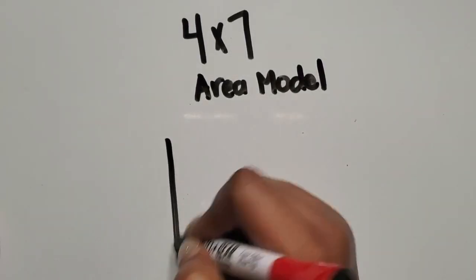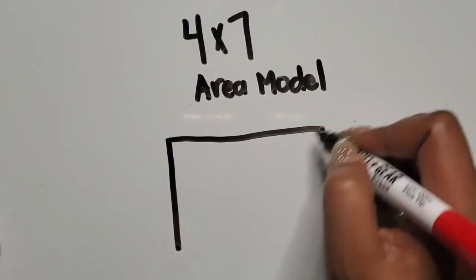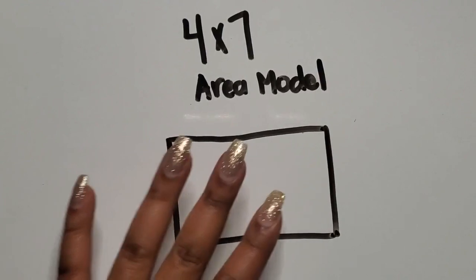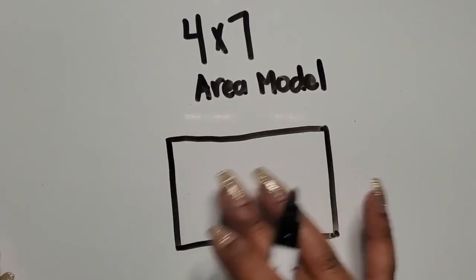I'm going to draw a rectangle like I did in the last video where I represented area with a grid. This time I won't have the grid or the squares inside.